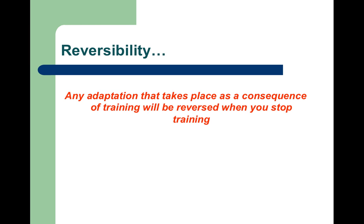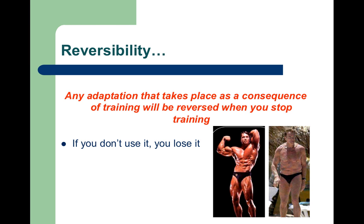Reversibility means that any adaptation that takes place as a consequence of training will be reversed when you stop training — essentially, if you don't use it, you lose it. For example, a picture of Arnold Schwarzenegger shows him looking highly muscular during his peak training years on the left, and a more recent picture on the right where he has stopped training shows a clear difference in his physique.